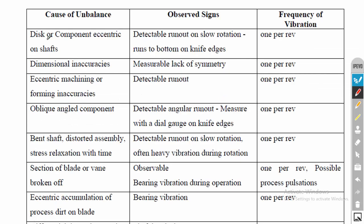There are other reasons for unbalance as well: a disc or component being eccentric on the shaft; dimensional inaccuracies, perhaps in the blades; eccentric machining or forming inaccuracies — for example, if a blade has a hole to fix it to the shaft with some eccentricity, it will produce unbalance. An oblique-angled component — if the component is not perfectly 90 degrees — will also produce unbalance. Then a bent shaft.